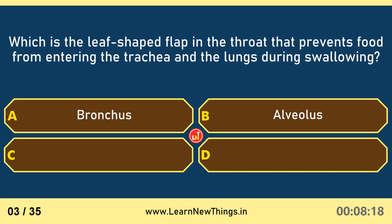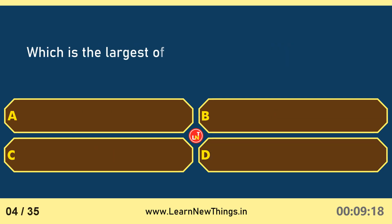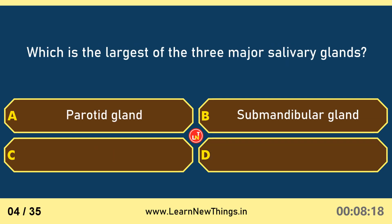The epiglottis is the leaf-shaped flap in the throat that prevents food from entering the trachea and the lungs during swallowing. The parotid gland is the largest of the three major salivary glands.